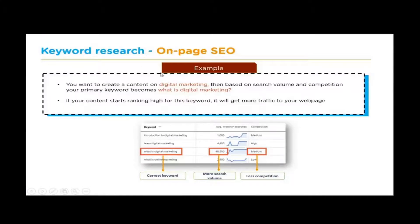For example, if you want to create content on digital marketing, based on search volume and competition, your primary keyword becomes 'what is digital marketing.' You can see that 'introduction to digital marketing' gets around 1,000 searches, but 'what is digital marketing' has a search volume of 40,500 — and it's even less competitive. So the search volume matters greatly when choosing keywords.